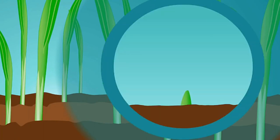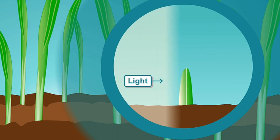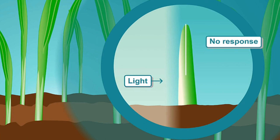Winslow Briggs inserted a very thin glass plate vertically through the tip. The glass does not prevent light transmission, but there was no bending. Auxin cannot travel through glass, and its concentrations remained equal on either side.